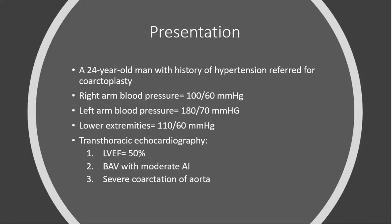Our case is a 24-year-old man with a history of hypertension referred for coarctoplasty. Right arm systolic blood pressure was about 100, left arm systolic blood pressure was about 110, lower extremities systolic blood pressure was about 110. His transthoracic echocardiography showed an ejection fraction of about 50%, bicuspid aortic valve with moderate aortic insufficiency, and severe coarctation of the aorta.